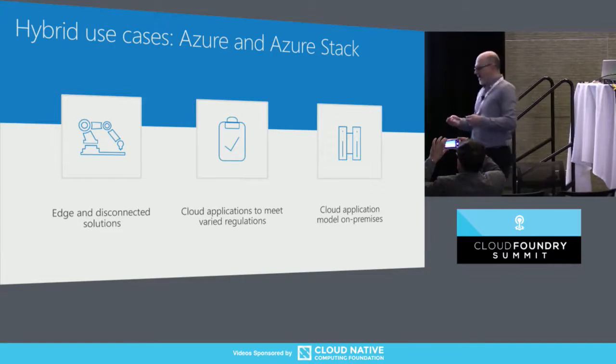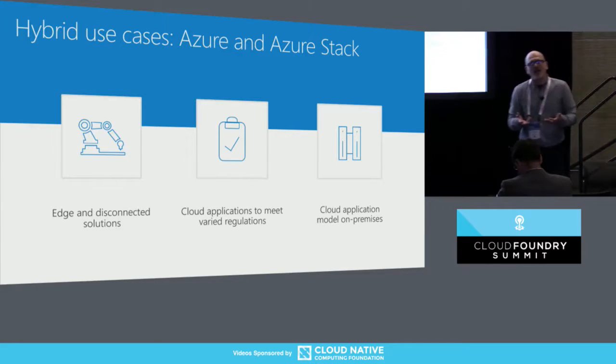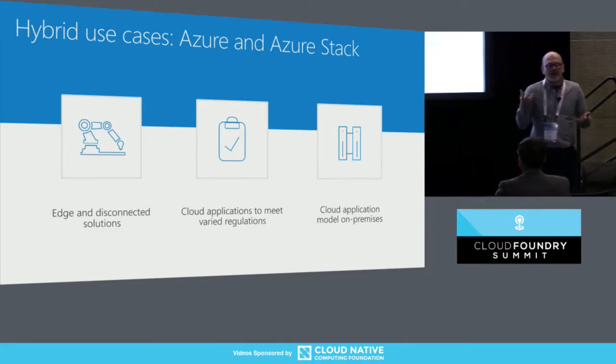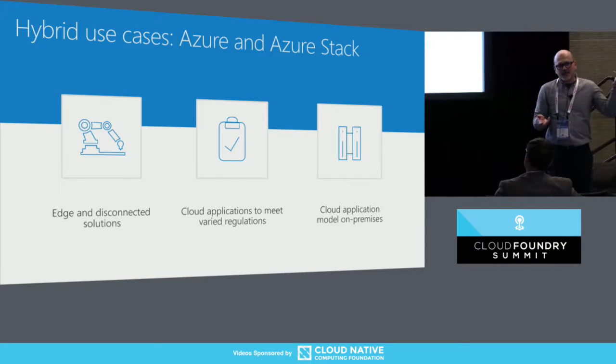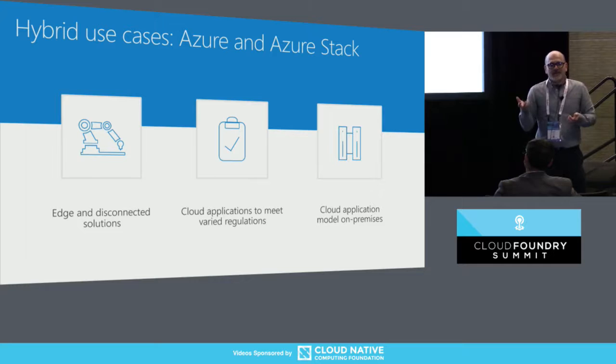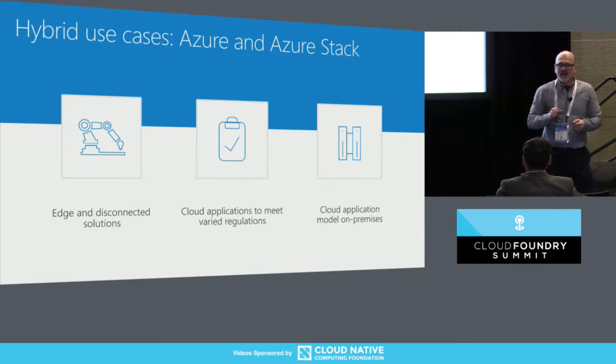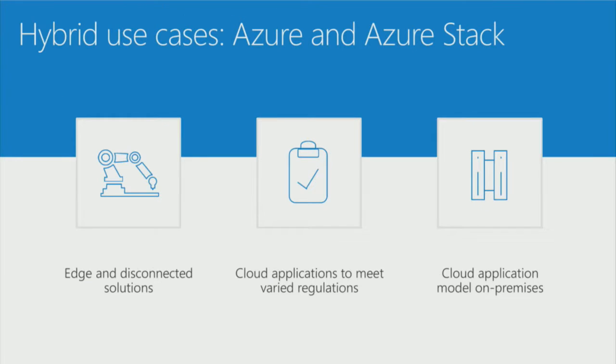So why do we do this? Because there are tons of hybrid scenarios. There are scenarios about edge computing and disconnected environments. You can have Azure running on a ship in the middle of the ocean, or on an oil rig someplace. There is a lot of data, a lot of data pipelines being built all the way from the manufacturing floor to the cloud. Whether you want to be connected via an edge computing node, you can have the same applications you develop for the cloud deployed on your Azure Stack.